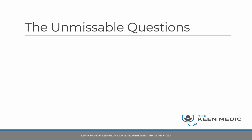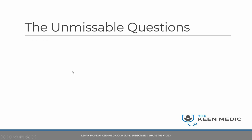So the first and foremost thing: the unmissable questions. Let's break it down into a few manageable chunks. Every time there is a patient with anemia, think about these few things. First of all, the drop. The second thing is what's the most acute thing that you need to be looking out for. And lastly, the stuff that you need to be ruling out. Let's talk about the drop first — the drop in the hemoglobin, how quickly they have become anemic.